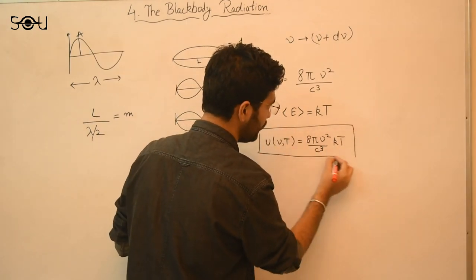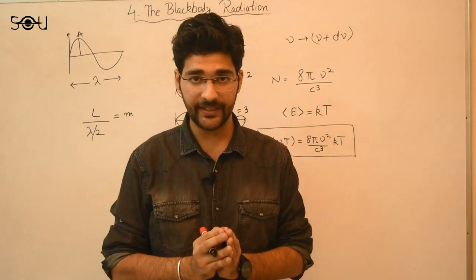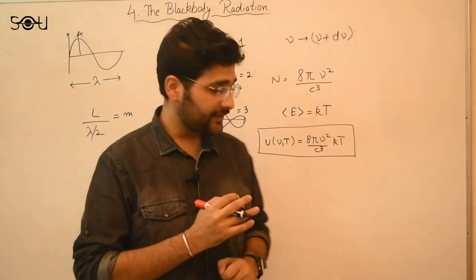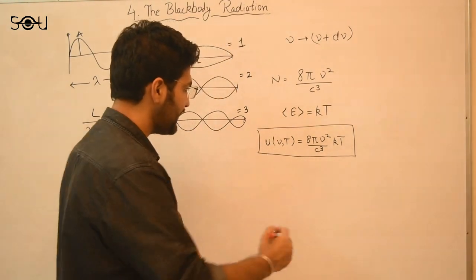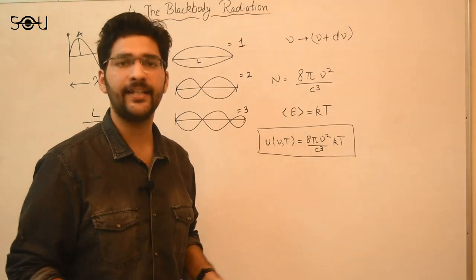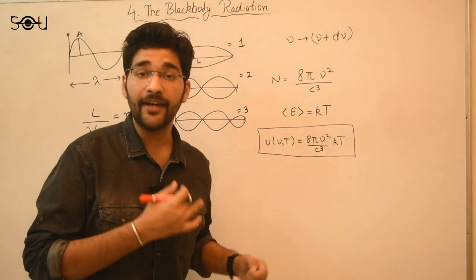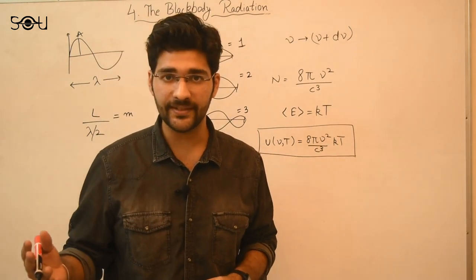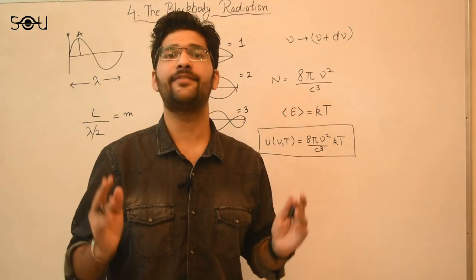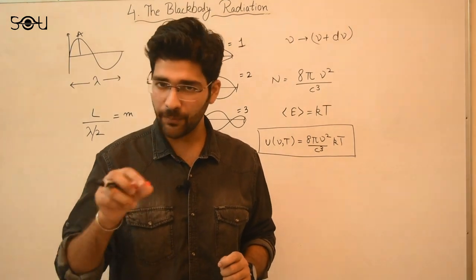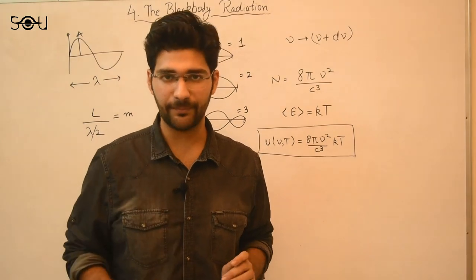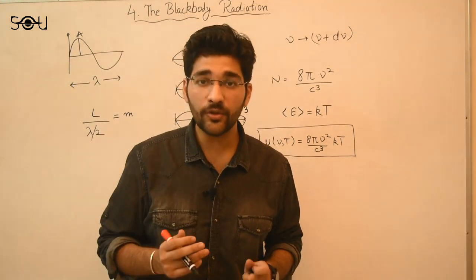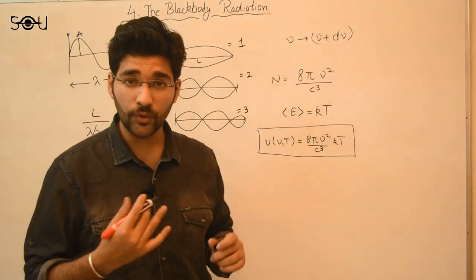So the Rayleigh-Jeans law gives: U(ν, T) = (8πν²/c³) × kT. This is the energy density of the black body spectrum according to Rayleigh and Jeans. But it's a disaster. If you carefully look at this formula, you see that it contains a ν² term, so if you integrate over all frequencies, the integral diverges at higher frequencies. This means the amount of energy emitted by a black body at higher frequencies is infinite — physically implying that a bread in your toaster would always burn no matter what the temperature. This concept of infinite energy at higher frequencies was pretty absurd, and so even Rayleigh and Jeans could not explain the black body spectrum.